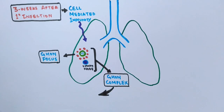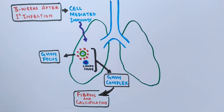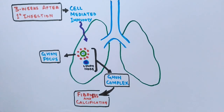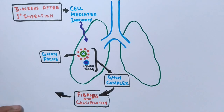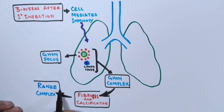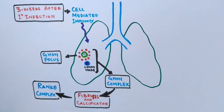Gradually there is fibrosis and calcification of the Ghon focus, and it is then termed the Ranke complex. At this stage, either there is complete elimination of tuberculosis, or it goes into a quiescent state — the dormancy we call latent tuberculosis.